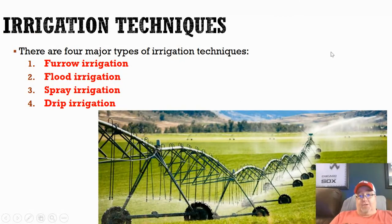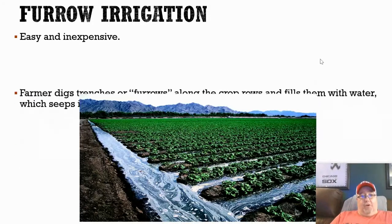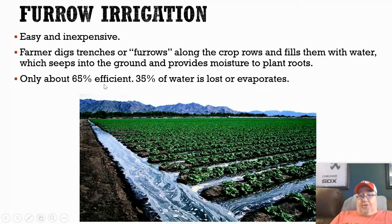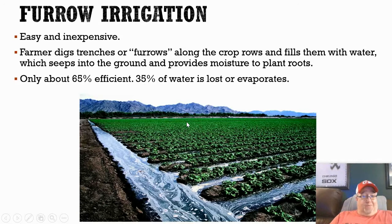There are four different irrigation techniques. The first is furrow irrigation — the farmer digs trenches between different rows of crops, then fills those trenches with water. It's fairly easy and ensures every plant gets water. However, it's only about 65% efficient because about 35% of the water is lost to evaporation and never even reaches the plant.